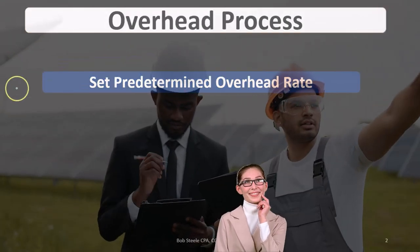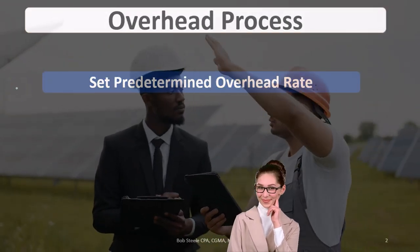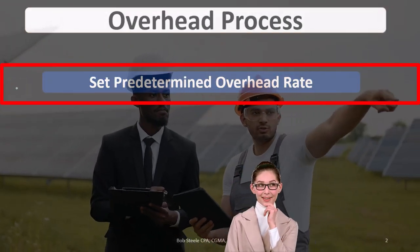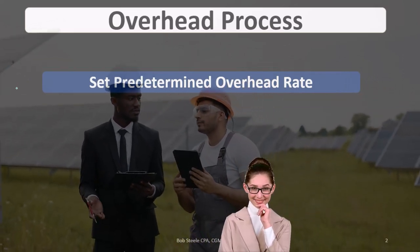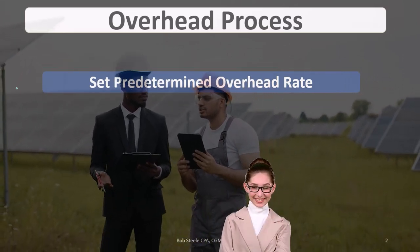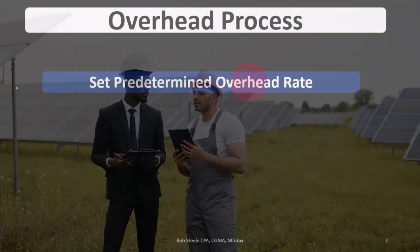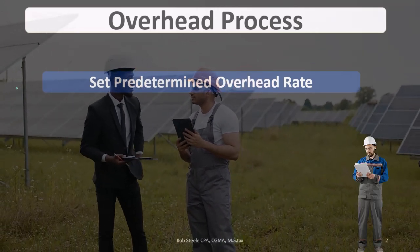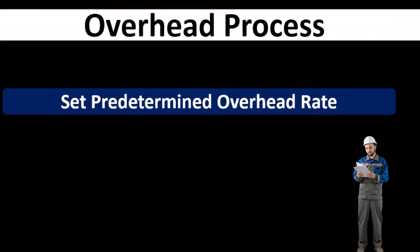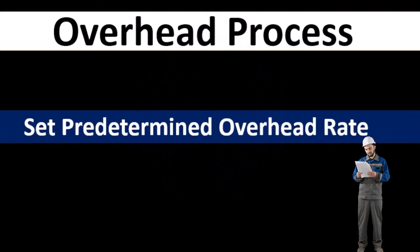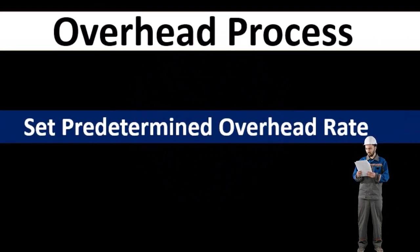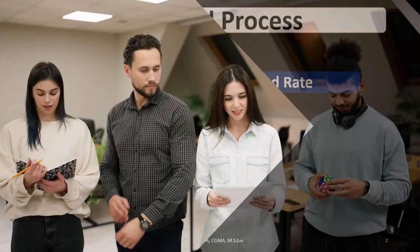First, we're going to set up a predetermined overhead rate. This predetermined overhead rate will help us assign what's in overhead to particular jobs — it'll help us move from overhead to particular jobs. We need to do it at the beginning of the process so that we can use it to allocate overhead to jobs as we go through the current time period.